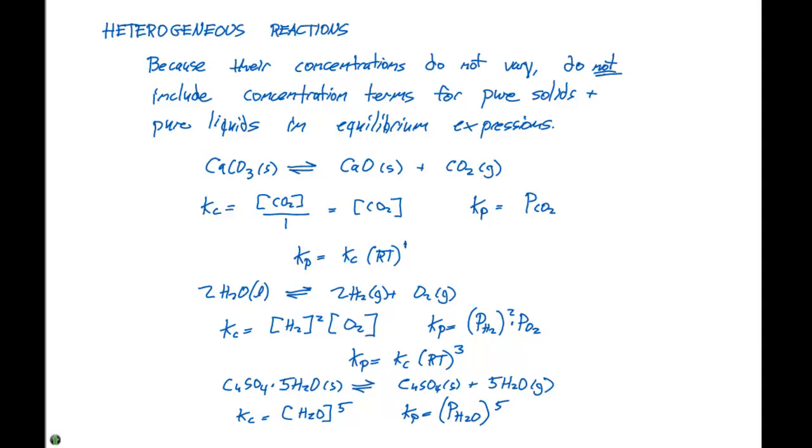The Kp is the partial pressure of H2O to the fifth power. And Kp equals Kc times RT to the delta N, which is 5 minus 0, or 5.